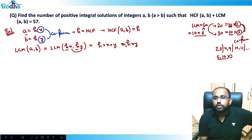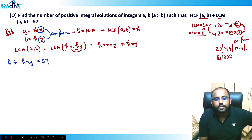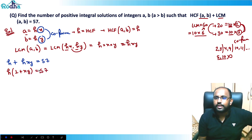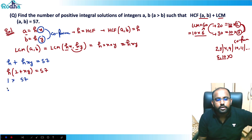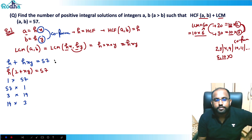So HCF(a,b) + LCM(a,b) = h + hxy = h(1 + xy) = 57. Now, 57 can be written as a product of two numbers in four ways: 1×57, 57×1, 3×19, and 19×3. We take these case by case.